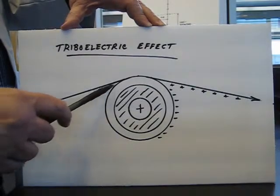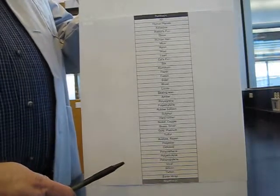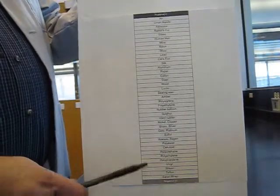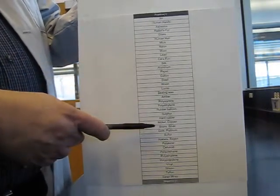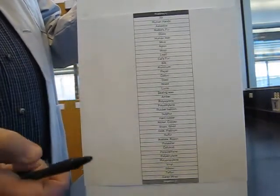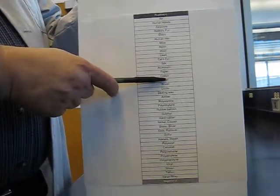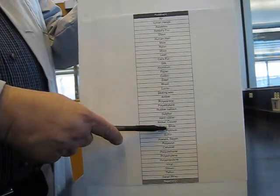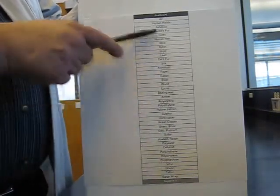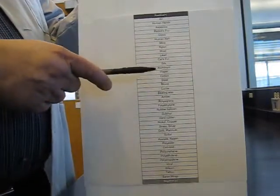This is an example of what's called the triboelectric series. So the way this works is you can take any two materials from this chart press them together pull them apart measure the charge on each one. The one that's higher in the table is going to be positively charged and the one lower is going to be negatively charged. And then the distance between the two materials the farther they are apart the more charge is going to be generated.